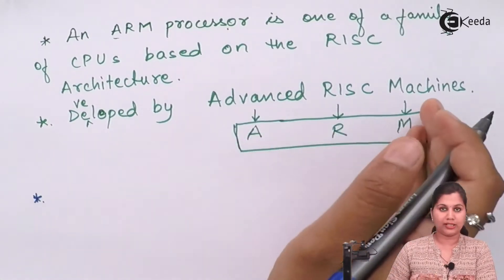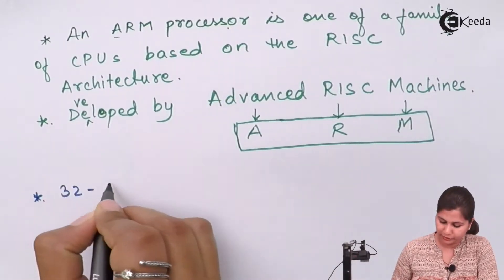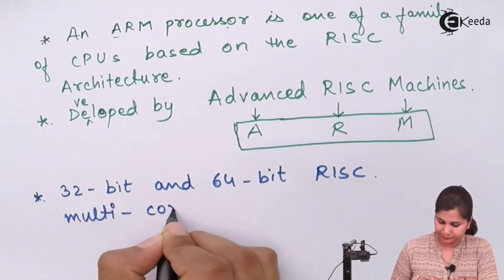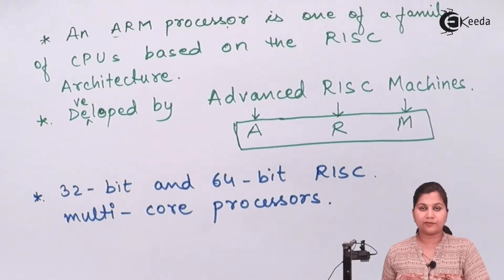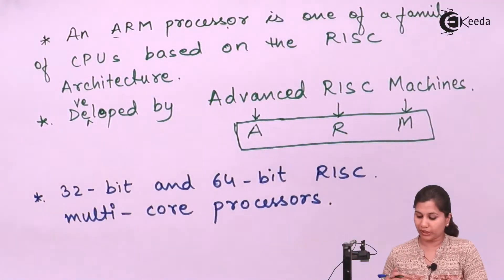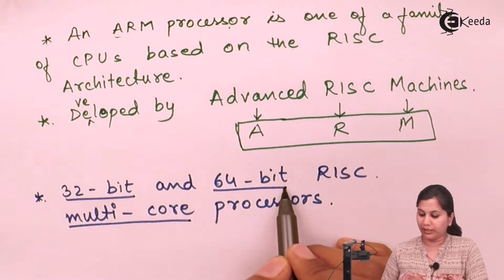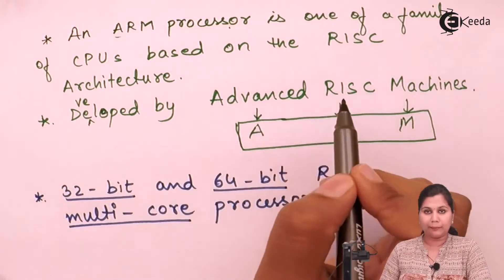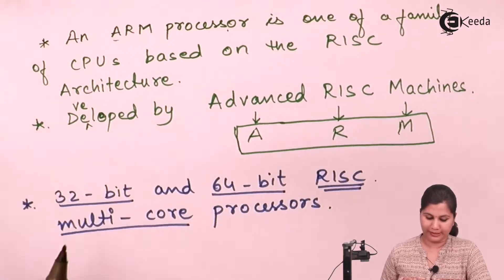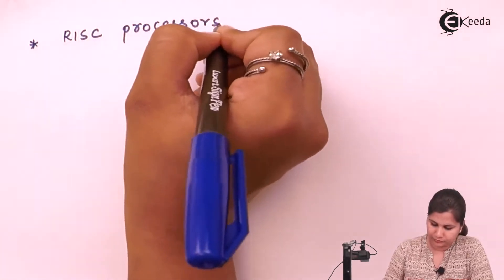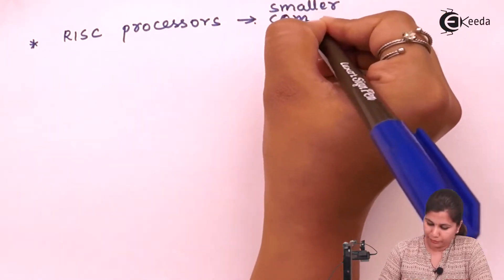Advanced RISC Machine is a company that develops 32-bit and 64-bit RISC multi-core processors. These processors are designed to perform a small number of instructions. As the full form of RISC is Reduced Instruction Set Computer, these RISC processors have smaller computer instructions.